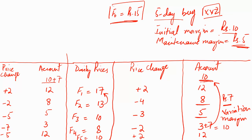This example was for the buyer of the contract. We can try the same example for the seller — the only difference will be in the signs of the daily price changes. On day 1 there is a price change of plus 2 for the buyer, but for the seller it is a loss because he could have sold the asset at a price 2 rupees higher than 15. So the seller's account is decreased by 2 rupees on the first day, standing at 8. This decrease is taken from the seller's account and added to the buyer's account — a seller's loss is the buyer's profit and vice versa.